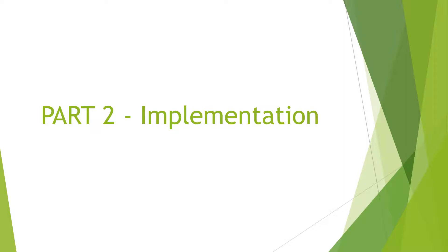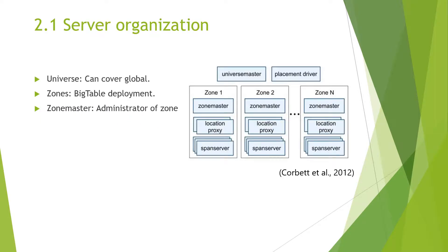Hi, this is Pintian. In part two, I will introduce the implementation of Google Spanner. The first part I will introduce is server organization. Looking at figure one, it shows the structure of Google Spanner with four parts. First is Universe Master, which monitors the status information of the zone level in this universe. Second is placement driver, which provides cross-region data migration management. Third is Zone Master, the equivalent of the master of Bigtable, managing data on the Spanner server. Fourth is location proxy, which stores location information for data.